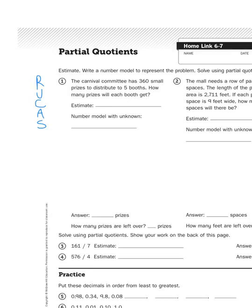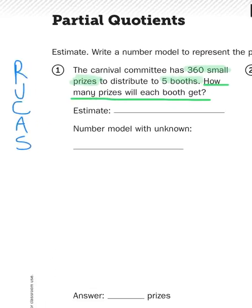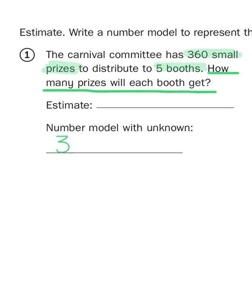The Carnival Committee has 360 small prizes to distribute to five booths. How many prizes will each booth get? So my number model with an unknown is going to be the number of prizes, 360, divided by the number of booths, which is five. And then we need an unknown. We'll say P for prizes.